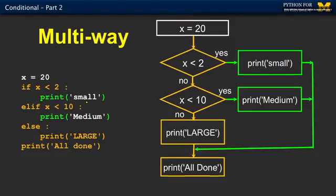If on the other hand, x was 20, it would say false, skip, question mark, false, skip, oh, else. Then the else always gets triggered if it gets that far, and then it runs that one.